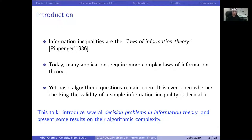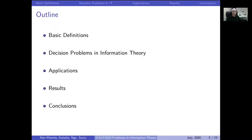In this talk, my goal is to introduce several decision problems in information theory and present some results on their algorithmic complexity by placing them in the arithmetic hierarchy. I will give some basic definitions, then define decision problems in information theory, briefly mention some applications, describe the results, and conclude.